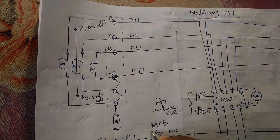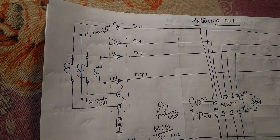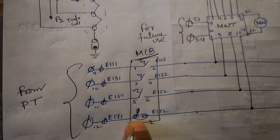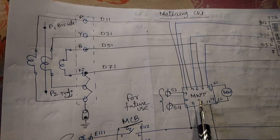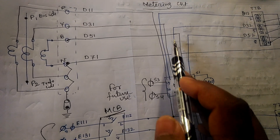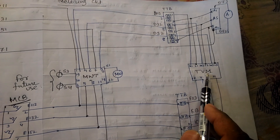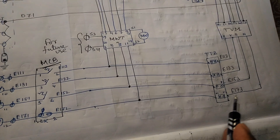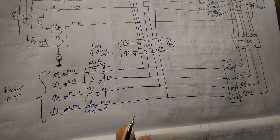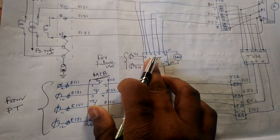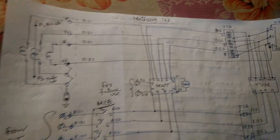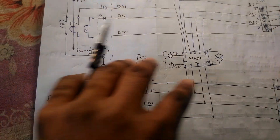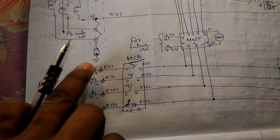The PT voltage comes through MCBs. We are connecting the CT terminal to the megawatt meter terminal, and also connecting to the TVM meter and to the ammeter selector switch, as per this diagram. The metering circuit connections come from the PT through the test terminal block.